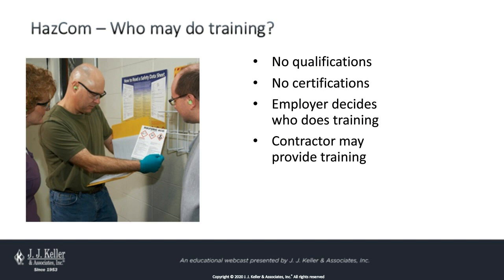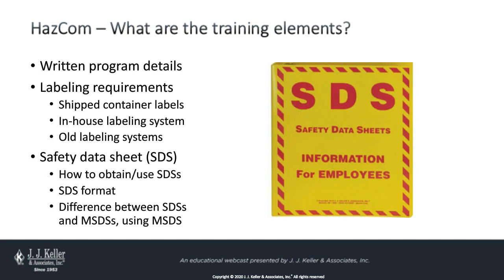OSHA does not specify who can present HAZCOM training, and there's no formal certification required. But you, the employer, are responsible for ensuring workers are adequately trained, which means deciding who is qualified to conduct the training. OSHA allows contractor-provided training through a third party. Training needs to cover the details of your written hazard communication program, including information about labels on shipped containers and any in-house labeling system. For example, if your in-house system includes HMIS or NFPA rating systems, employees need to understand what those mean.